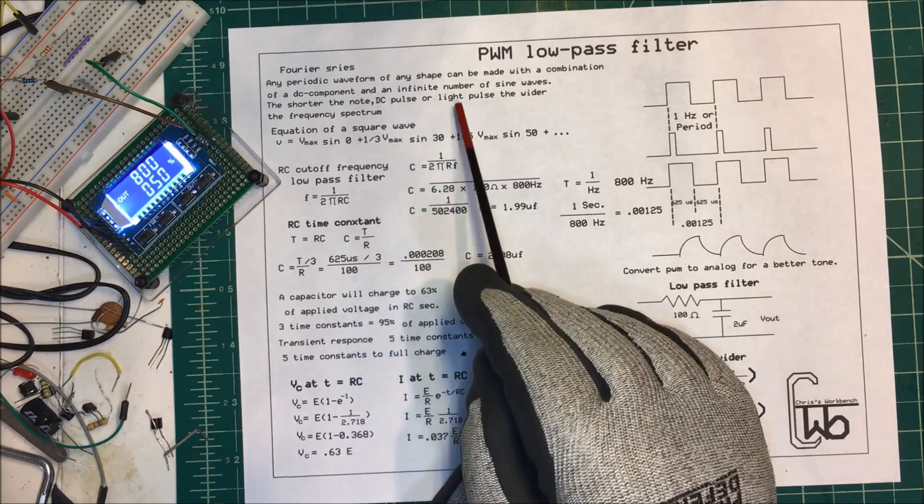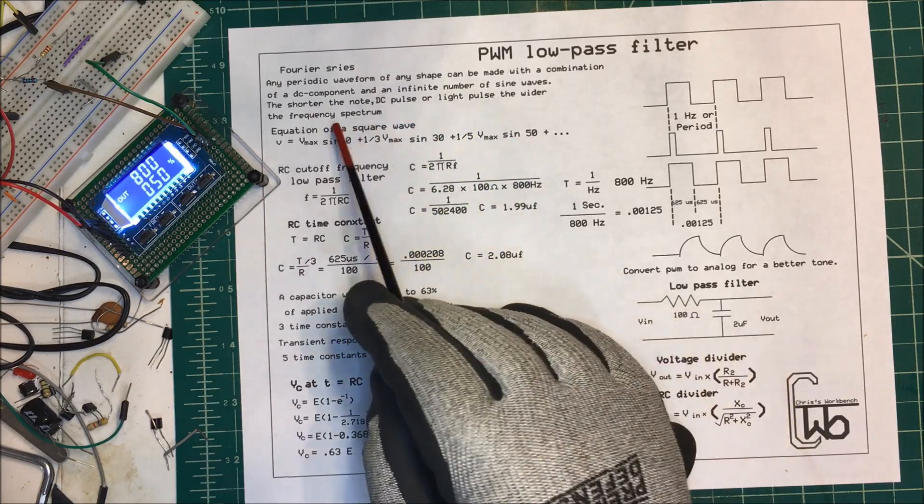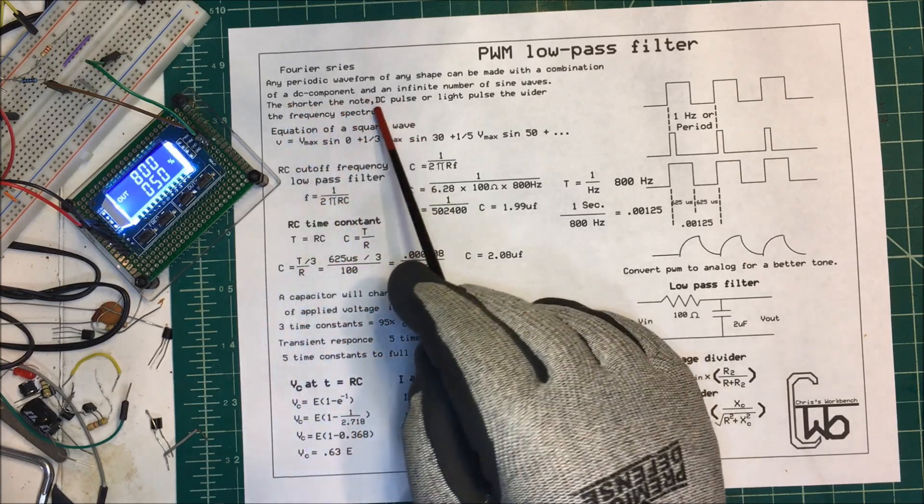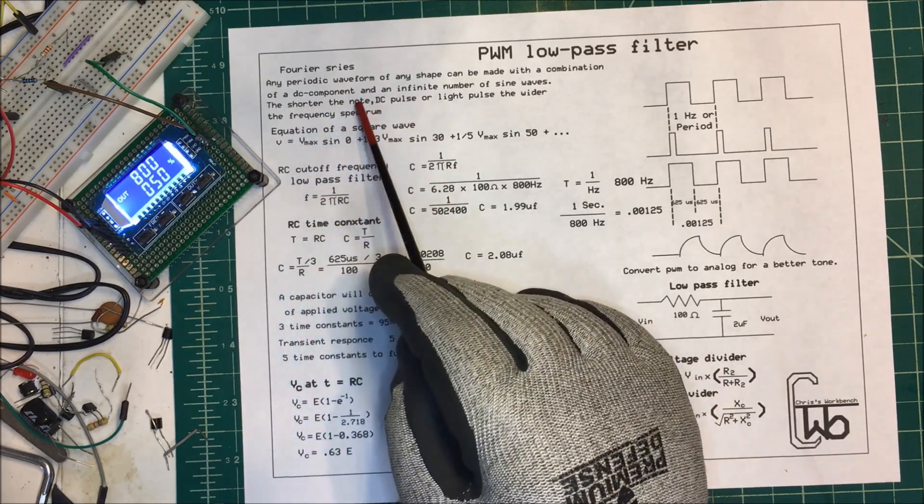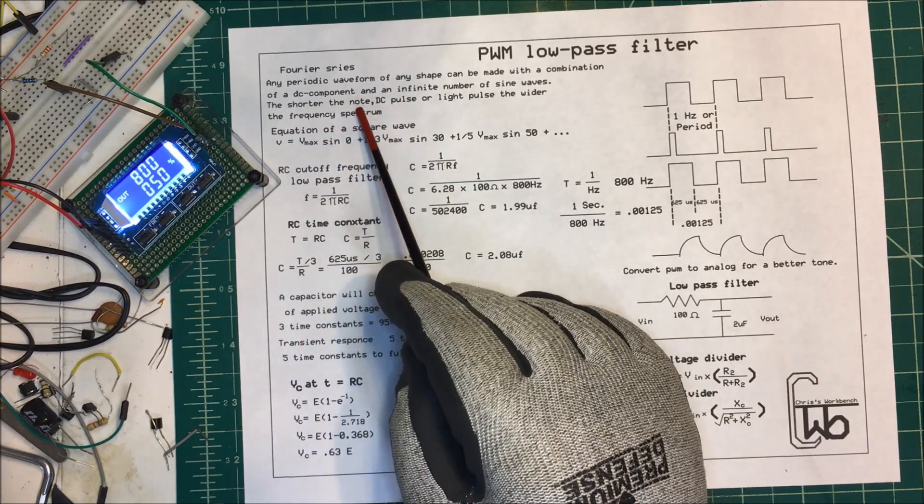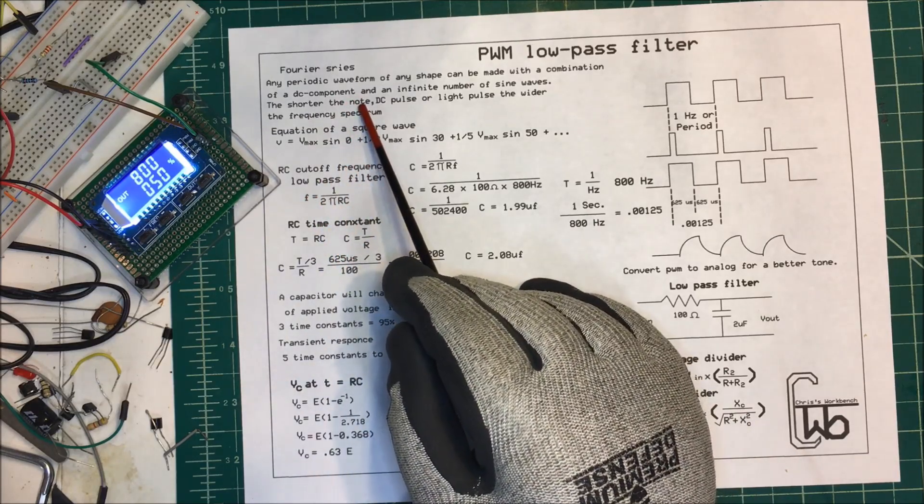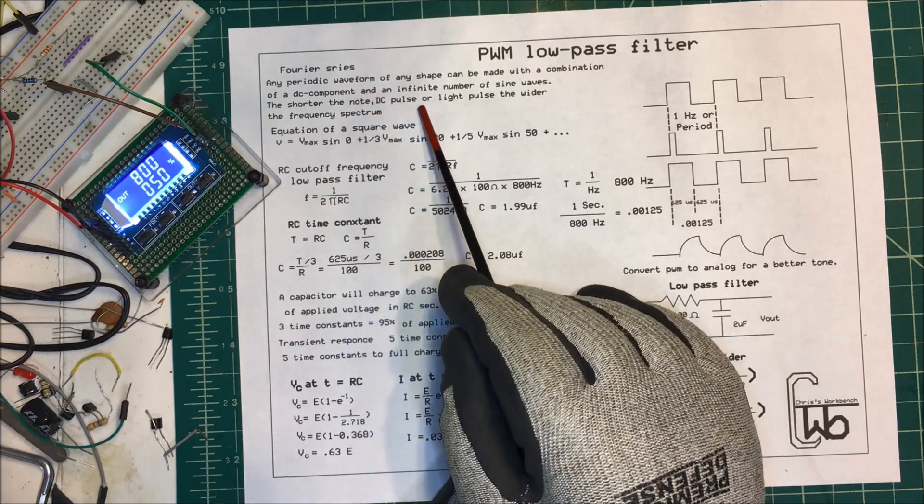The shorter the note, DC pulse or light pulse, the wider the frequency spectrum. If you're playing a note, say a C, and you cut it off short, it's going to take more frequencies to make that note up. Same with a DC pulse.